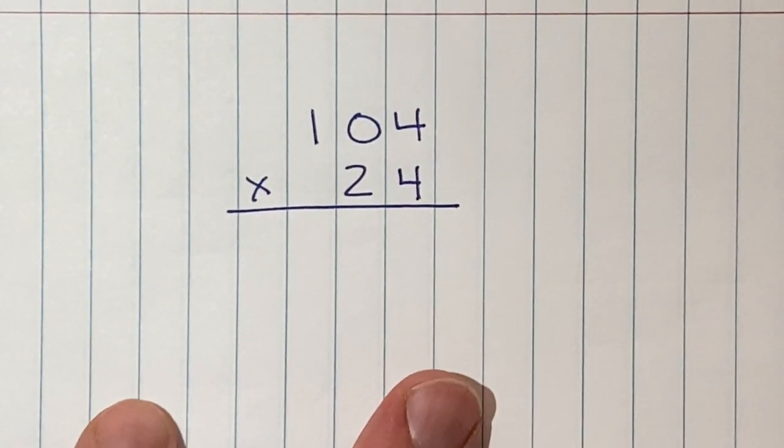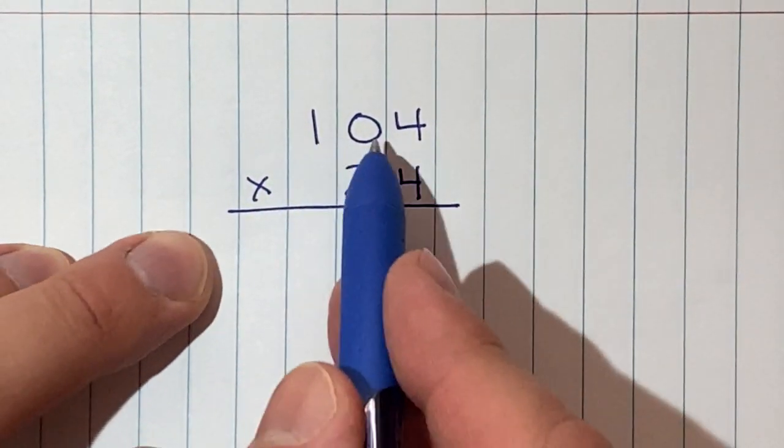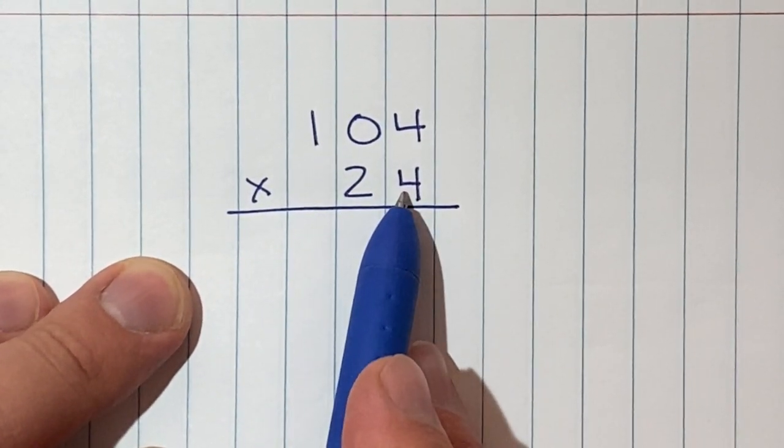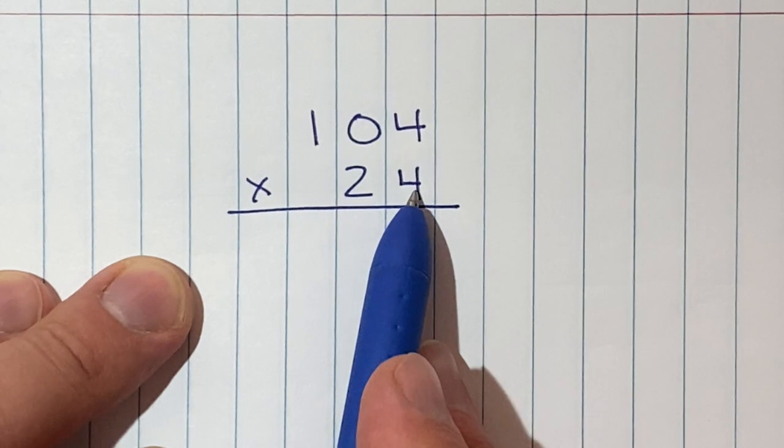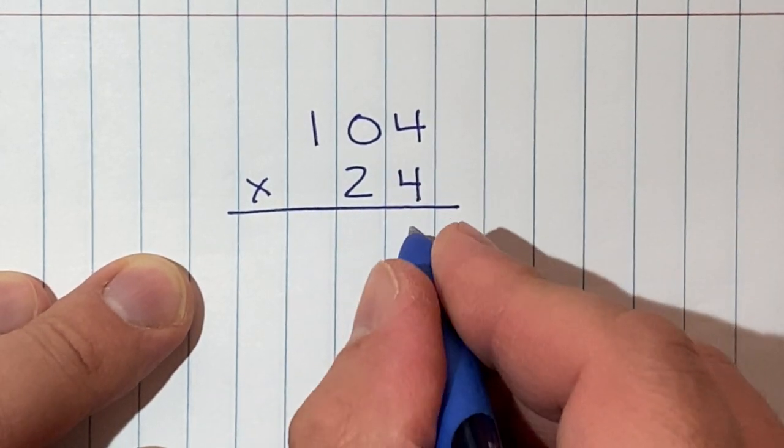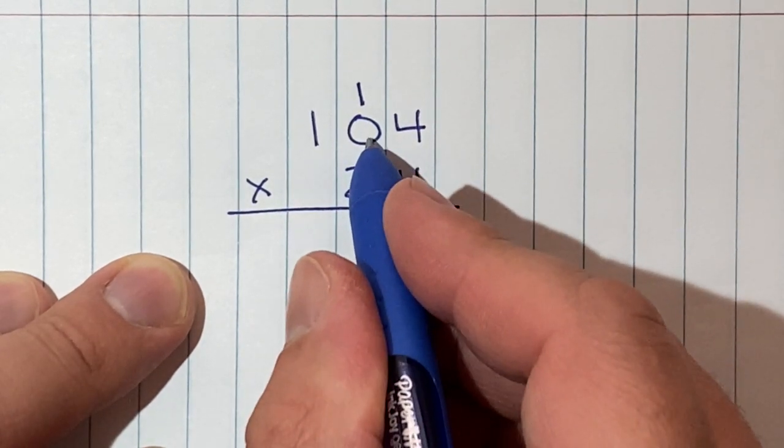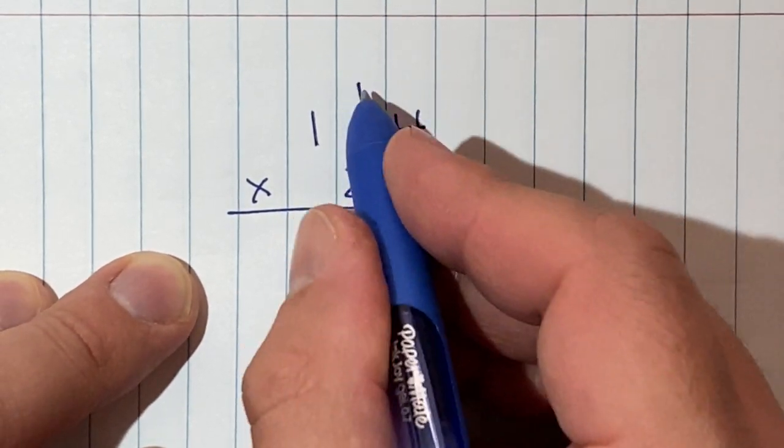So 104 times 24, we're going to start in the lower right, which in this case is a four. Four times four is 16. Six goes down, one goes up.